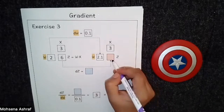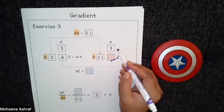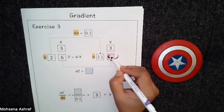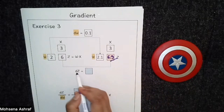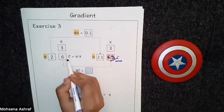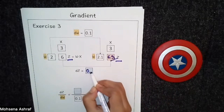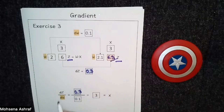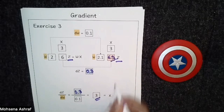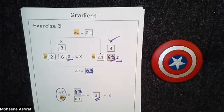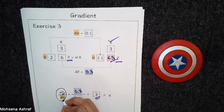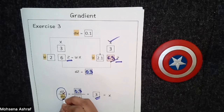Next exercise, we have to find out the value of z. So 3 × 2.1 gives us 6.3. As we are getting 6.3, we calculate dz: 6.3 − 6 = 0.3. We put 0.3 here, and dz/dw gives us 3, which is the value of x. Again, you can see that dz/dw means we will have an increase of 3 units for z for a change of 1 unit of w.